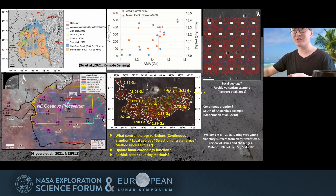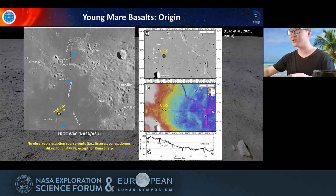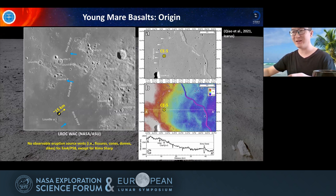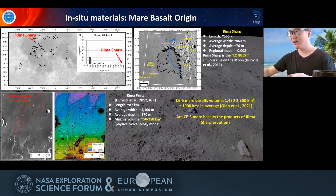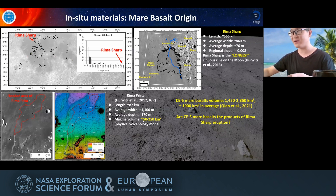The Chang'e-5 samples will provide precise information on this point. Regarding the formation of the range of young mare basalts in this region: there are no other observable eruption sources in this region except Rima Sharp. It is very natural to link these together and study their relationships. Rima Sharp is much larger than Rima Sharp, which was modeled by Hurwitz et al. They think the formation of that rima required lava between 50 to 200 cubic kilometers. Because Rima Sharp is much larger, it is natural to infer the formation required much more lava, and this lava must have been deposited somewhere in this unit.